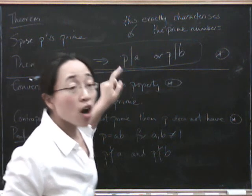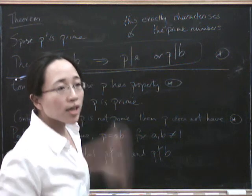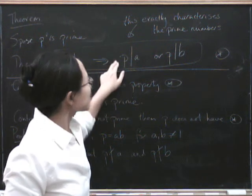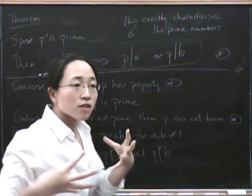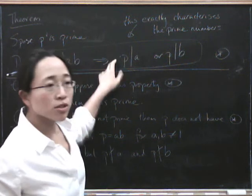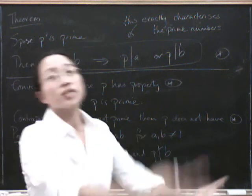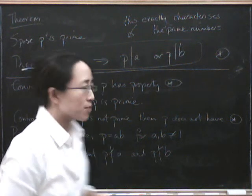Now, you might wonder why on earth you'd want to use such a convoluted property instead of that other one, and the answer is maybe you wouldn't, but this one can be more useful if you want to use the fact that your number is prime to prove something else. This one can often be more useful for using it, whereas the other one might be more useful for testing to see whether a number is prime in the first place.